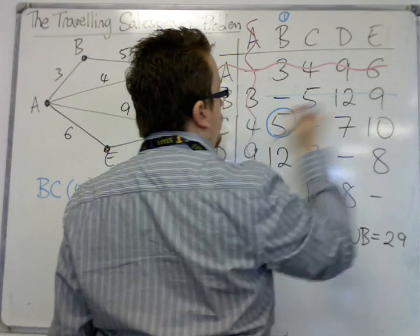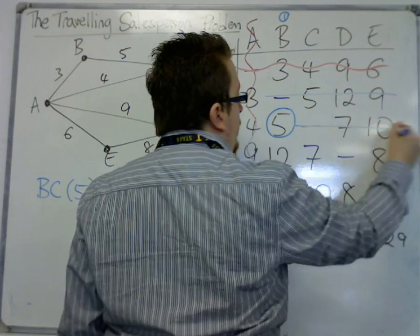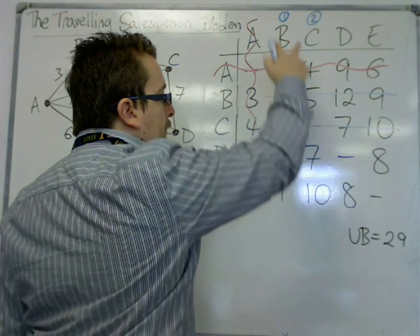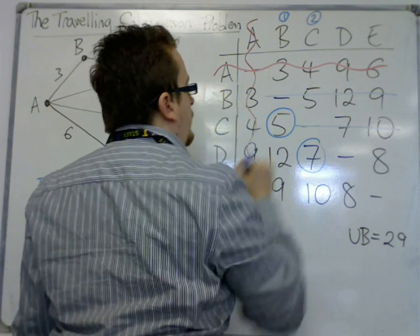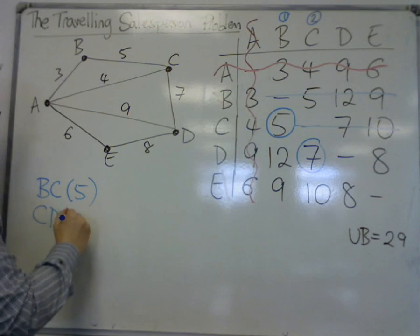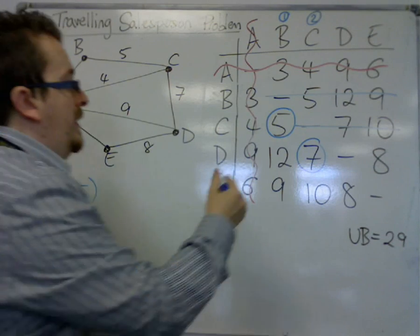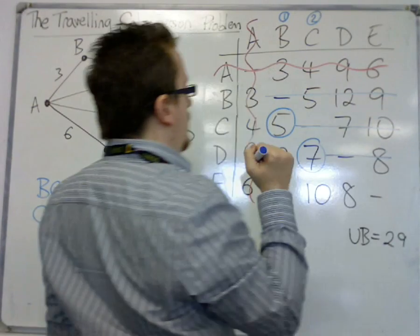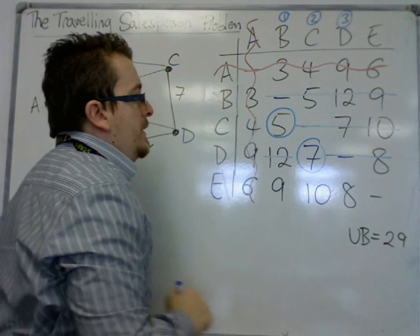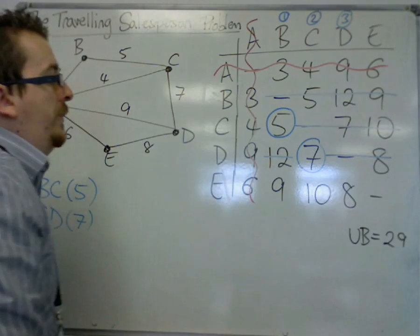We delete that first row. Then we delete the rest of the row. Then we're looking down both columns B and C. So that will next select C, D. So that's C, D for 7. Delete the rest of the row. Now I'm looking down B, C and D.